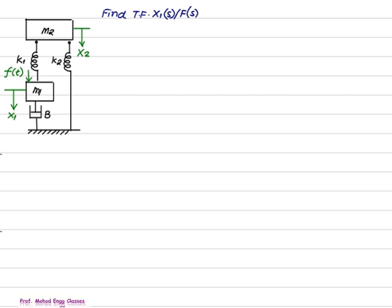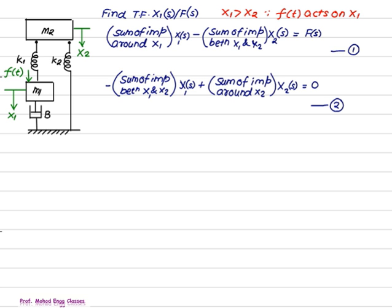Since we have two variables, we will use two impedances. Since force is applied at x1, x1 is greater than x2, and therefore our first variable is x1 and second variable is x2. These are the same common terms we have used previously. We have equation number 1 formed by the first equation and the second one.